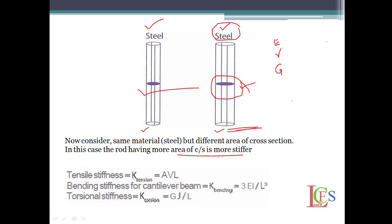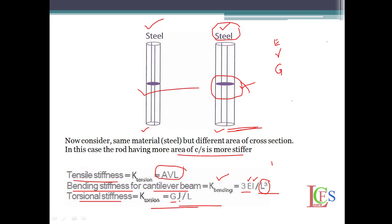These are the formulas for different stiffness applications. For tensile stiffness, the formula is AE/L. For bending stiffness of a cantilever beam, K bending is equal to 3EI divided by L³, where E is Young's modulus, I is the moment of inertia, and L is the length of the geometry. For torsion stiffness, K is equal to GJ divided by L. These formulas will help you to do some hand calculations.